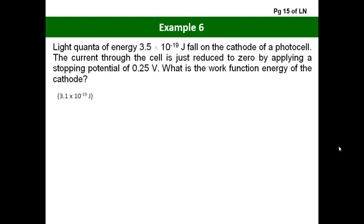The current through the cell is just reduced to zero by applying a stopping potential of 0.25 volts. You are asked to find what is the work function energy of the cathode. We start off by looking at the key features and important things in this question.